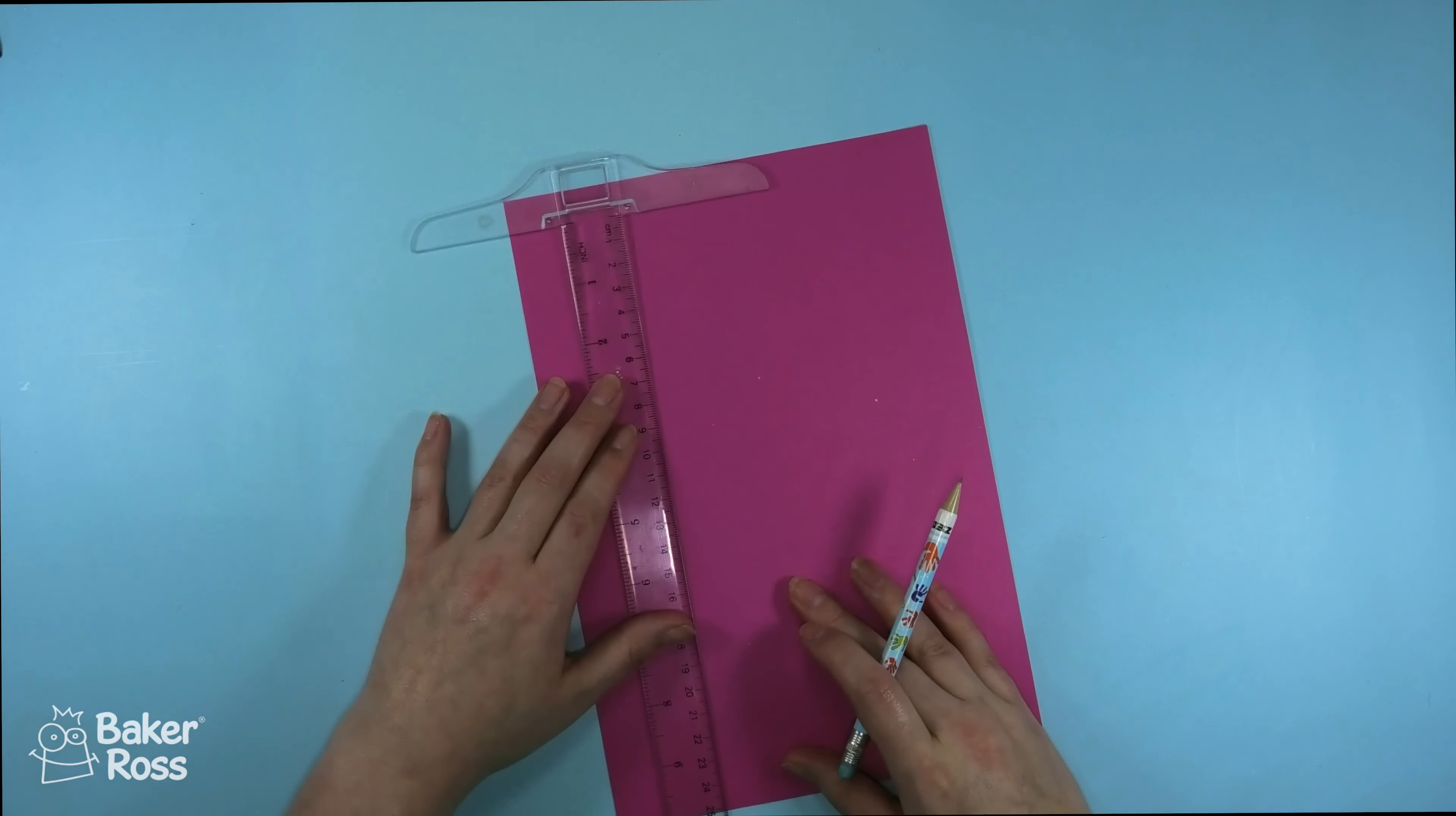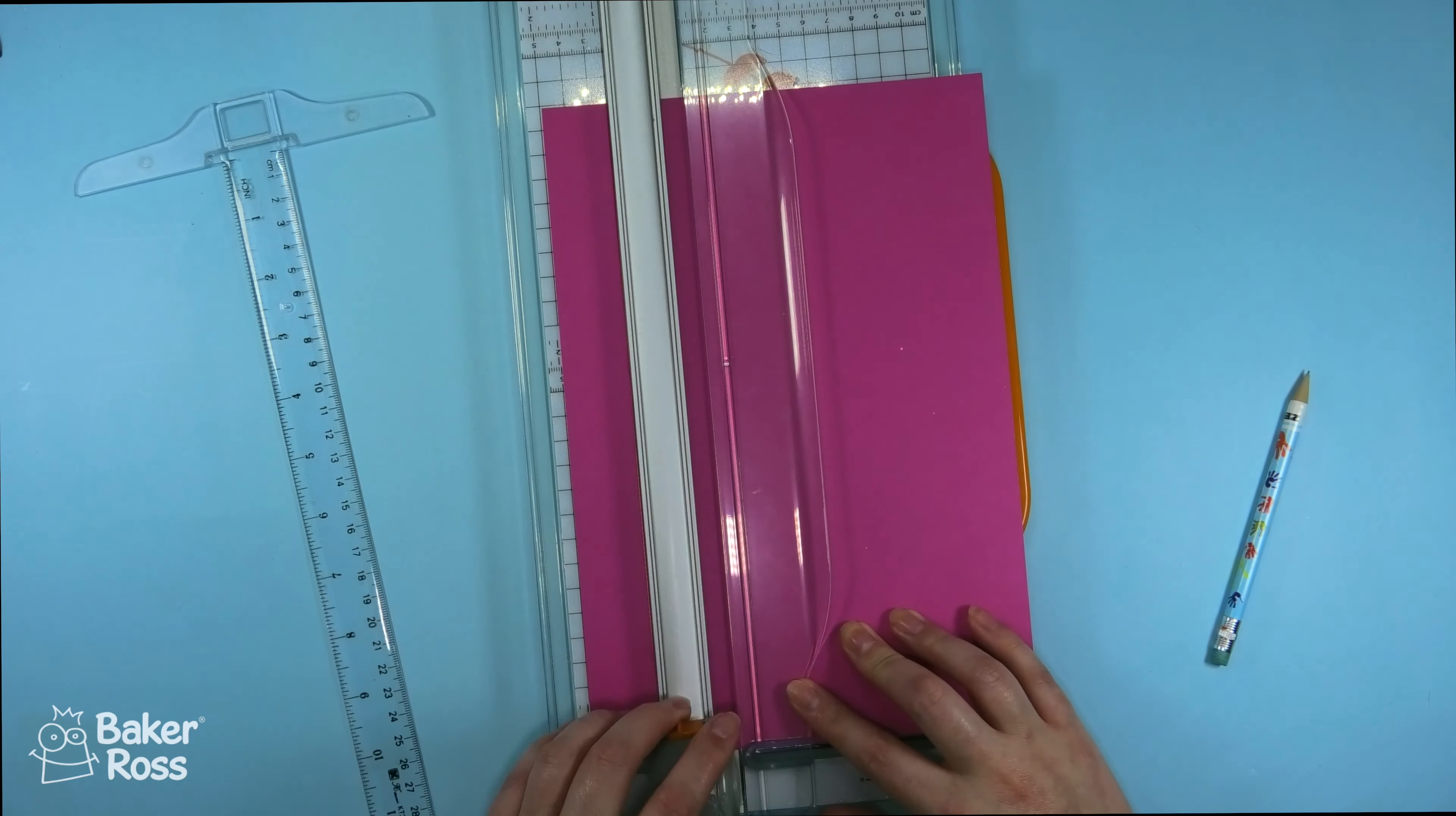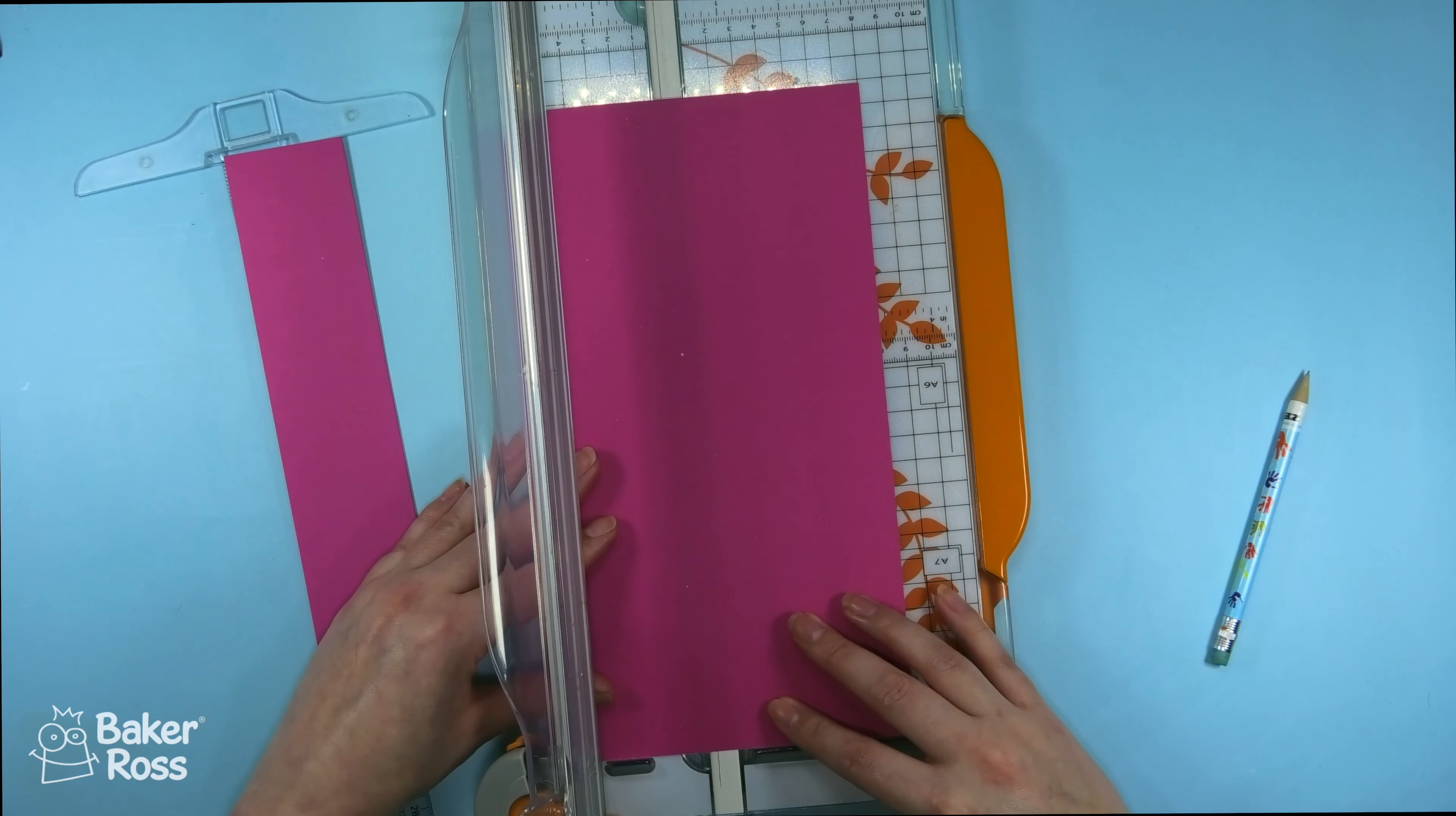I'm starting off here by measuring out approximately four centimeters across this strip of pink paper and then you'll want to go ahead and cut that out twice. You could use scissors for this, I'm using my paper trimmer because I have it on hand, but you just want two nice long even strips of paper.